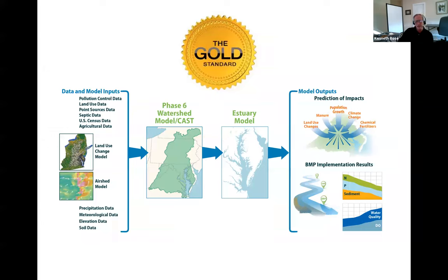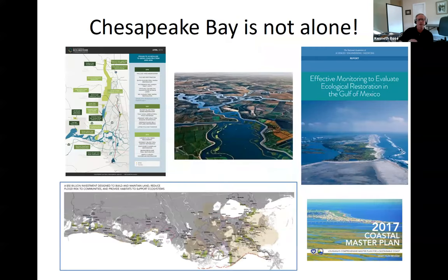Now we're thinking about how to relate that to fish and crabs in the Bay. This model is used to go all the way back and ask: what combination of actions could I take in the watershed — reduce nitrogen fertilizer here, capture overland runoff there — and what happens to all that nitrogen as it traverses down into Chesapeake Bay? Then you go back and say, let's try this, maybe that'll work better and be cheaper.